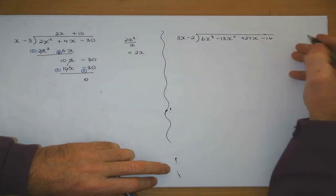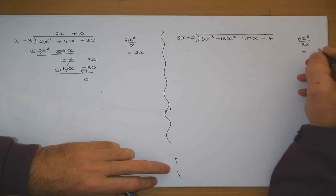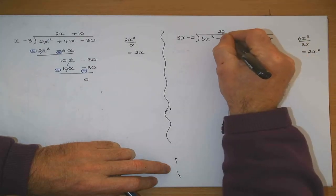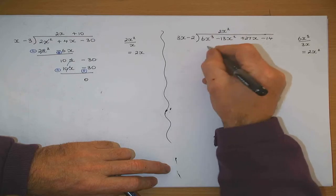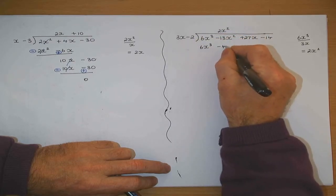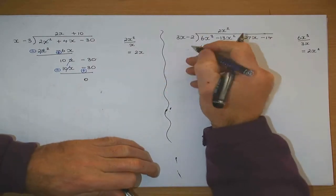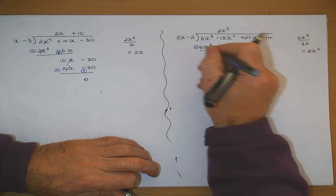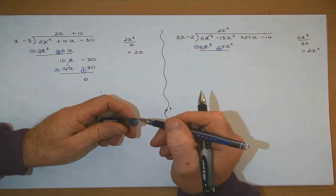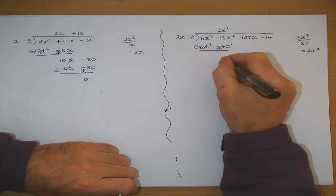3x into 6x cubed — 6x cubed divided by 3x gives 2x squared. 2x squared by 3x, then 2x squared by minus 2. Change the sign on the lower line and add. 6x cubed minus 6x cubed cancel. Minus 3x squared plus 4x squared.